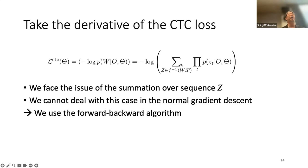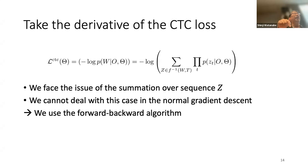We cannot take the normal gradient descent directly in the CTC case. Similar to the HMM-EM algorithm, we can use the forward-backward algorithm. This lecture will give you the connection from here to how to formulate the similar forward-backward variables for CTC.